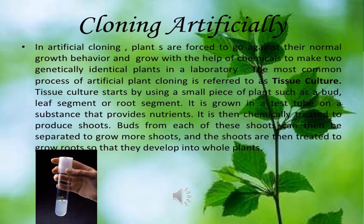In this slide we are discussing artificial cloning of plants. Plants are forced to go against their normal growth behavior and grow with the help of chemicals to make two genetically identical plants. In a laboratory, the most common process of artificial plant cloning is referred to as tissue culture. Tissue culture starts by using a small piece of plant such as a bud, leaf segment, or root segment. It is grown in a test tube on a substance that provides nutrients, then chemically treated to produce shoots. Buds from each shoot can be separated to grow more shoots, which are then treated to grow roots so that they develop into whole plants.